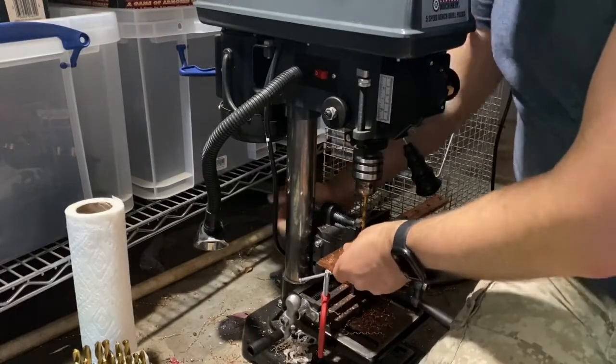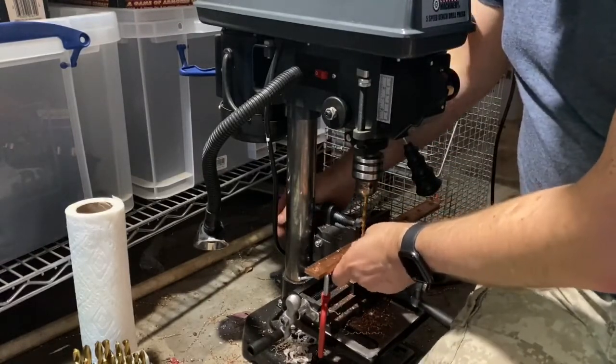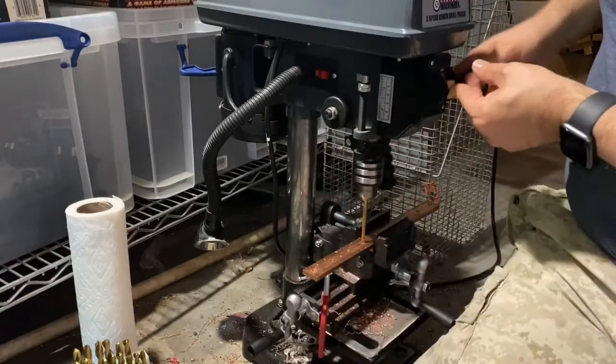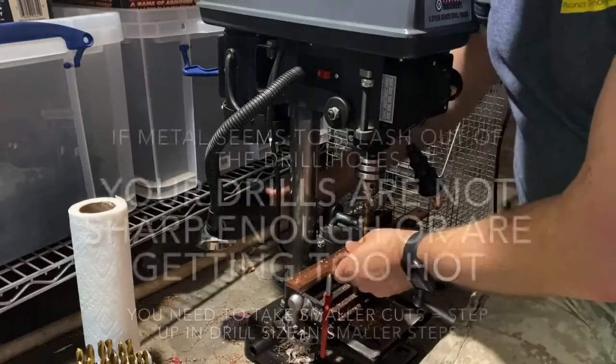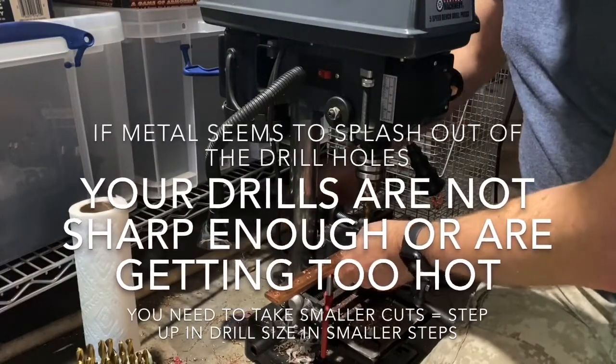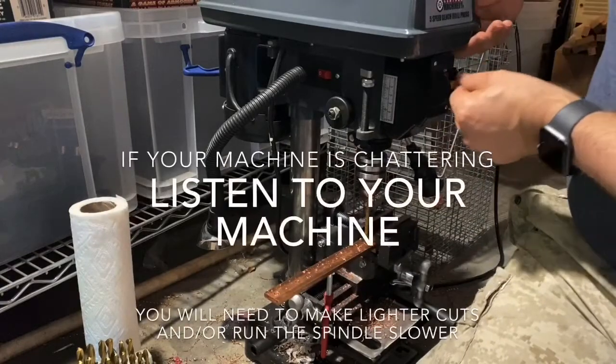You don't want your machine, which in this case is a very small light drill press, to be struggling with the cutting. The whole machine starts shaking and the vice starts shaking. Those are the machine talking to you and telling you that it can't handle it.